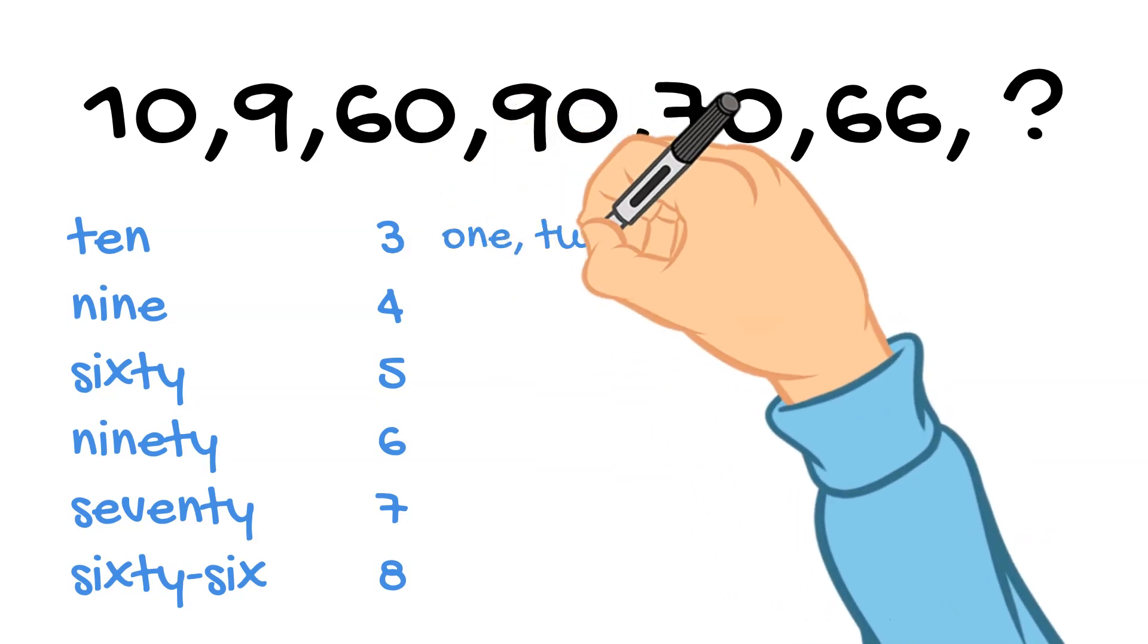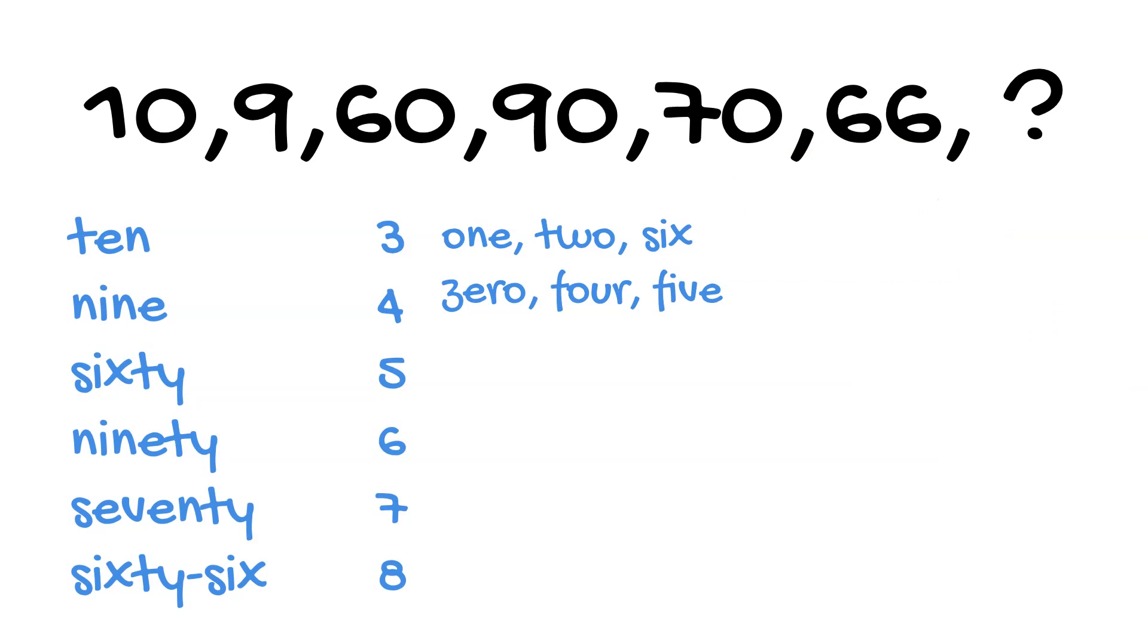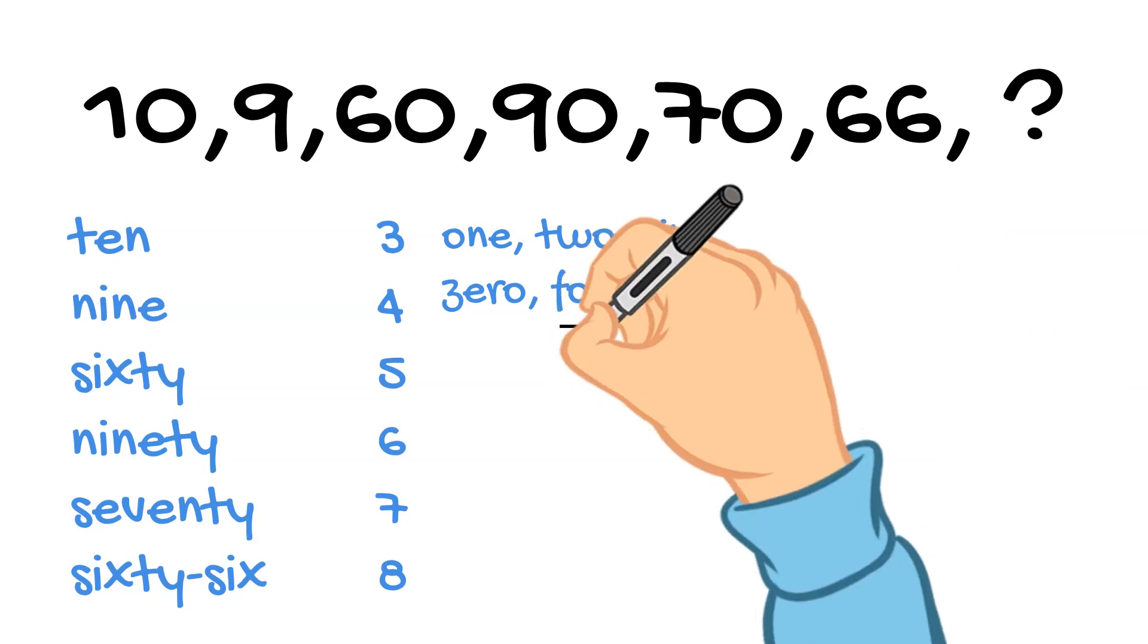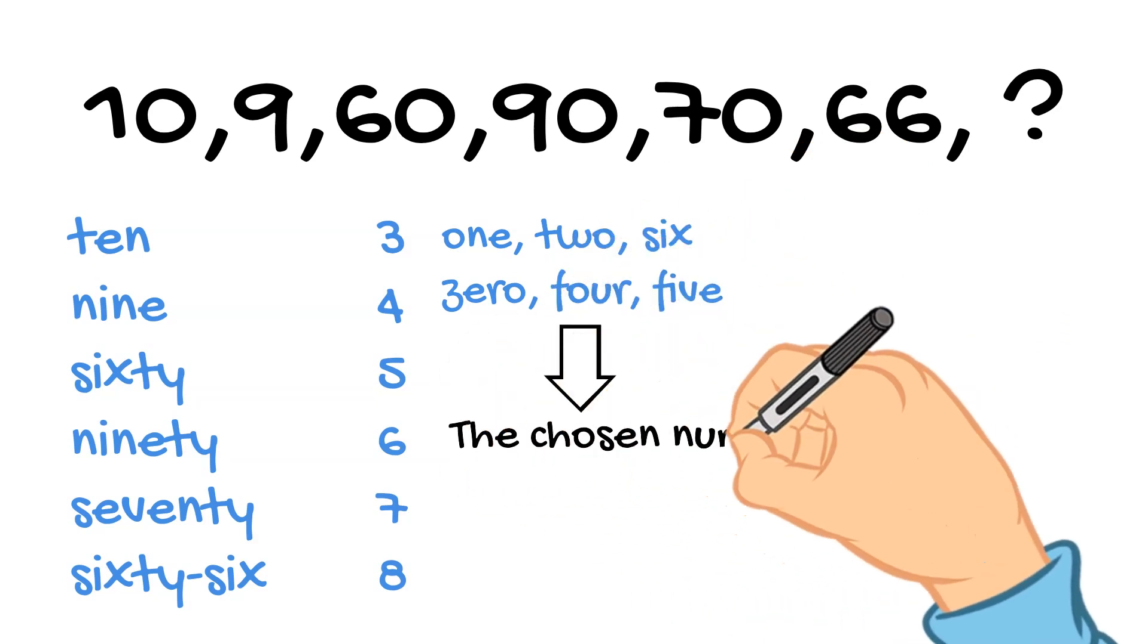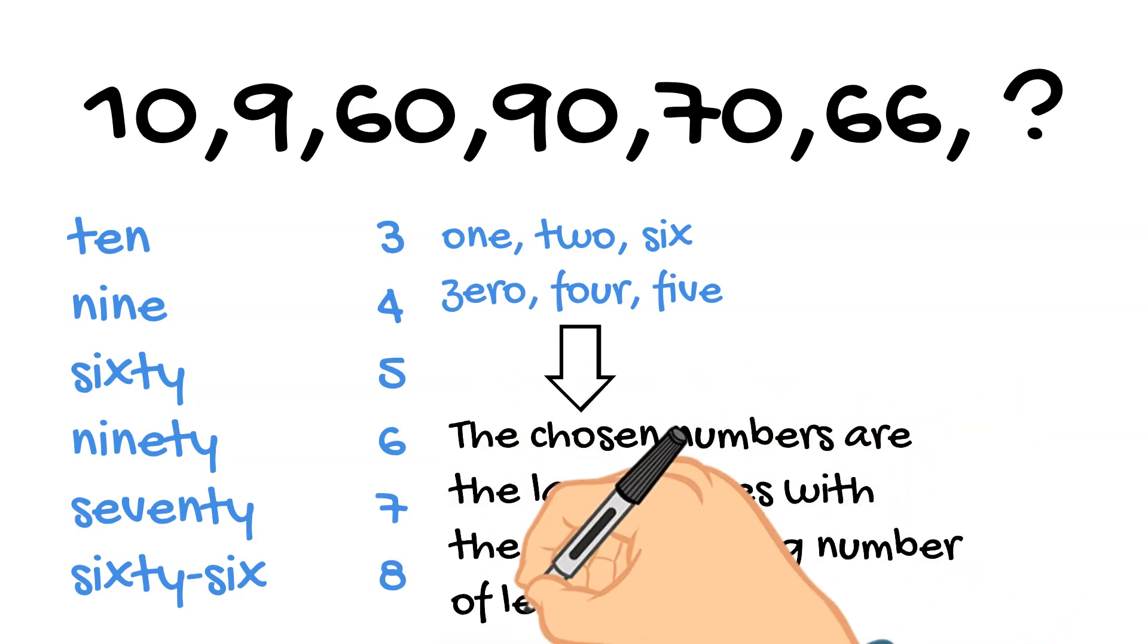There are also one, two, and six. The same applies for second number, etc. The second criteria that the chosen numbers are the largest ones with corresponding number of letters.